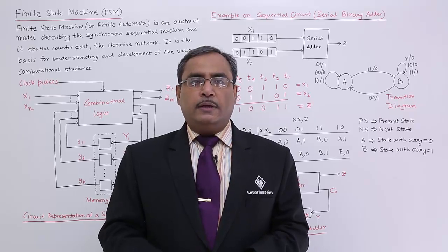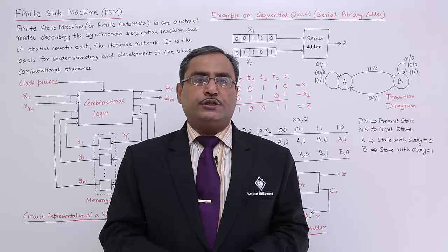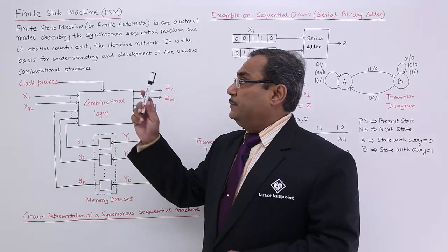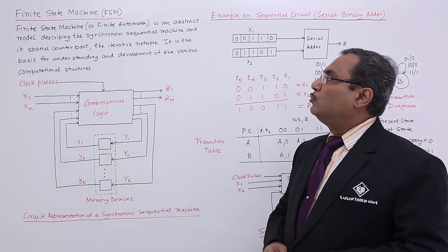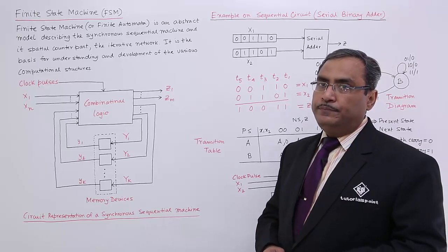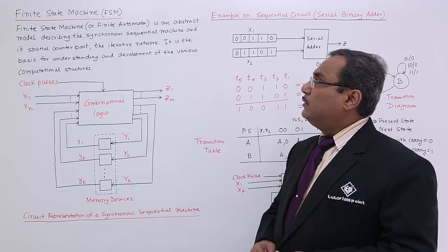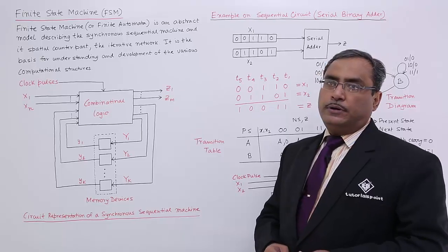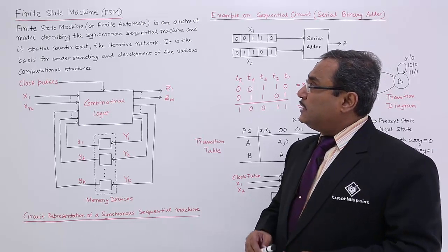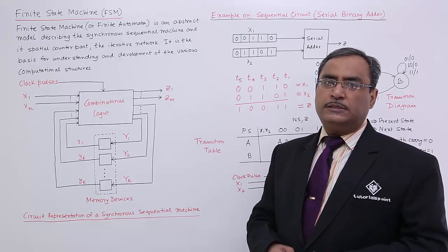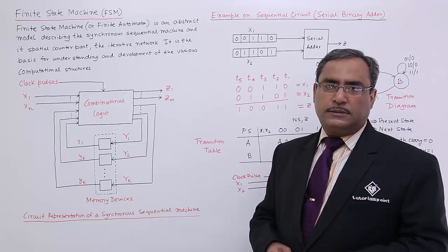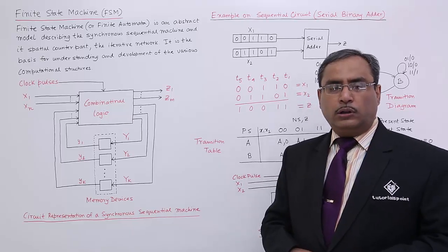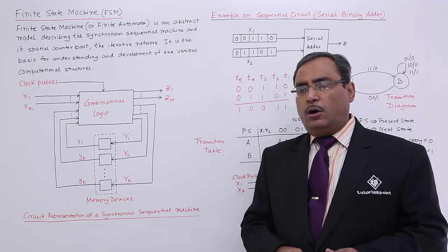Finite state machine (FSM) is the topic of this session. A finite state machine or finite automata is an abstract model describing the synchronous sequential machine and its special counterpart, the iterative network. Synchronous means it will depend upon the clock period or clock pulse — something will happen after application of the clock pulse. All digital circuits can be divided into two categories: combinational and sequential.